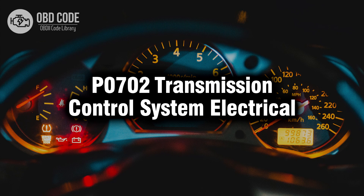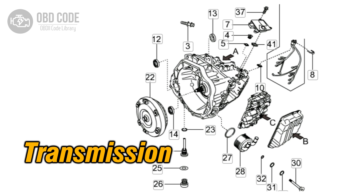Welcome. In this video we will talk about code P0702, its symptoms, causes, and possible solutions. The P0702 trouble code indicates a problem with the electrical circuitry of the transmission control system. This code is often associated with issues related to the transmission control module (TCM), or its communication with other control modules in the vehicle. It points to an electrical fault rather than a specific mechanical issue with the transmission.